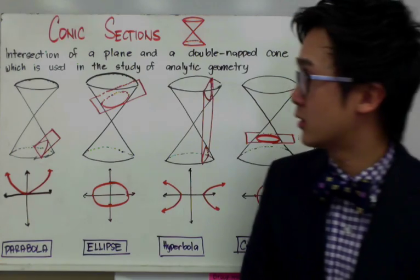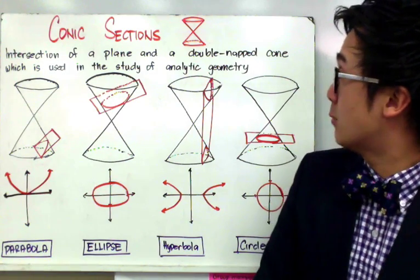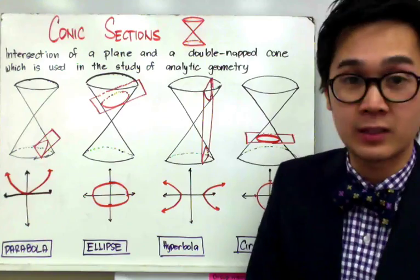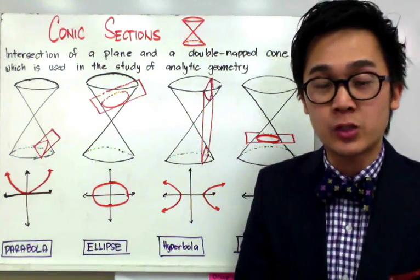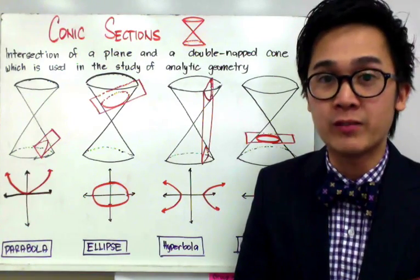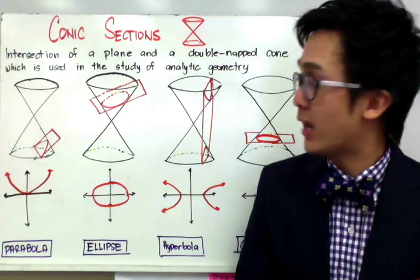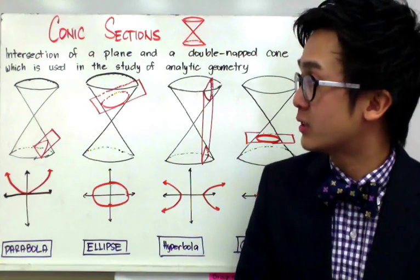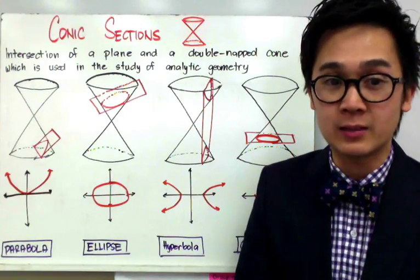Conic sections, by definition, are the intersection of a plane and a double-naped cone, which is used in the study of analytic geometry. In analytic geometry, it is very important that you can visualize what you are working on. There are four conic sections that we're going to be focusing on in this lesson.